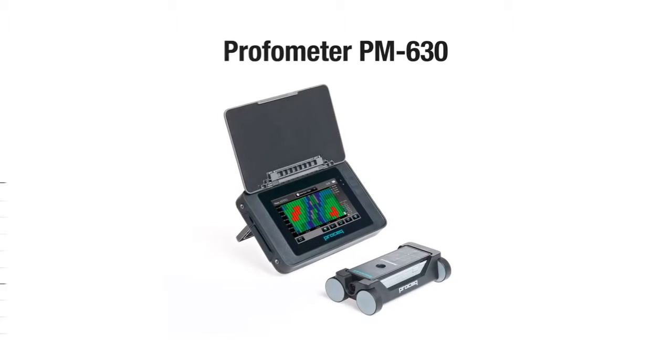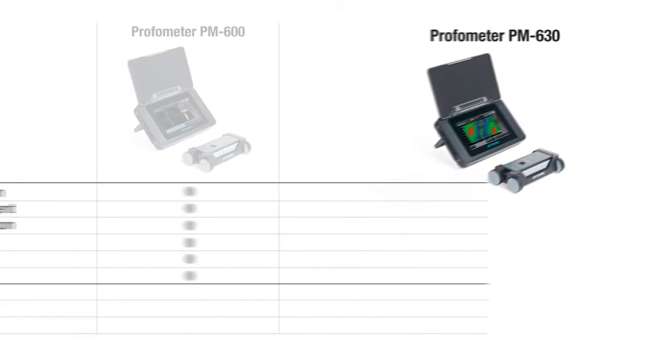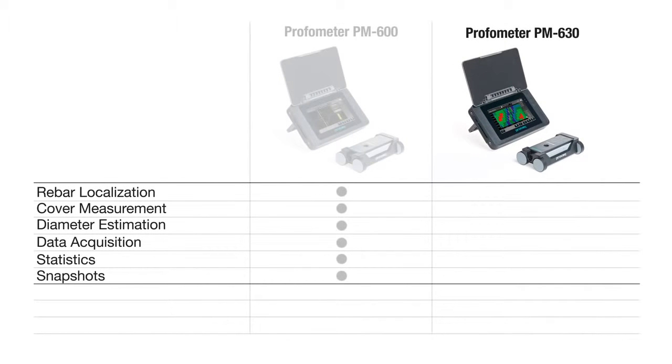The advanced concrete cover meter, ProFormator PM630, is a sophisticated instrument extending the application range of the PM600 with the single line, multi-line and area scan modes and also provides additional statistical views.